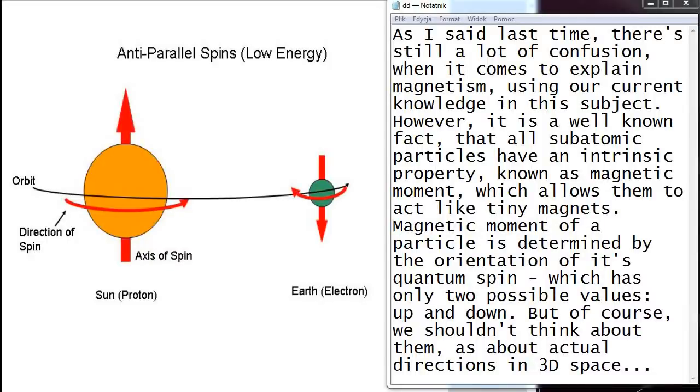As I said last time, there is still a lot of confusion when it comes to explaining magnetism using our current knowledge of this subject. However, it is a well-known fact that all subatomic particles have an intrinsic property known as magnetic moment, which allows them to act like tiny magnets. Magnetic moment of a particle is determined by the orientation of its quantum spin, which has only two possible values, up and down.